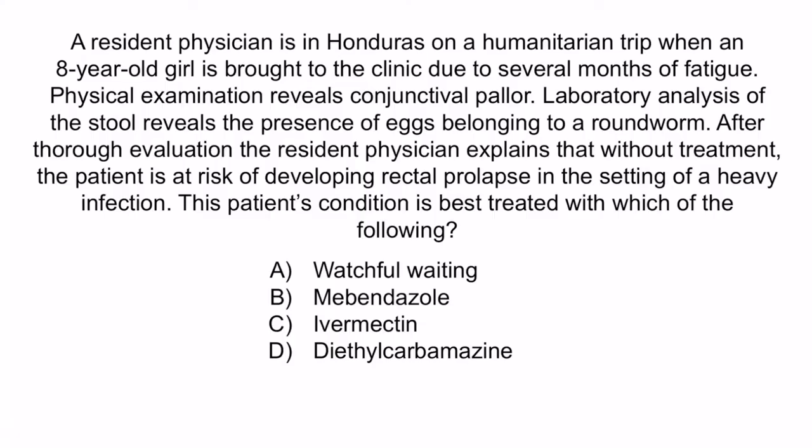A is wrong because without treatment, this patient is at risk of developing ongoing anemia, diarrhea, and rectal prolapse, so it would not be appropriate to just wait without giving the patient medication. C is wrong because while ivermectin may have some efficacy against whipworm, it has not been shown to be as effective as bendazoles. Finally, D is wrong because diethylcarbamazine is used to treat other parasitic infections such as loa loa, but not whipworm.